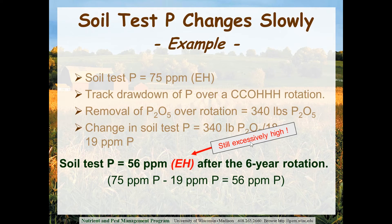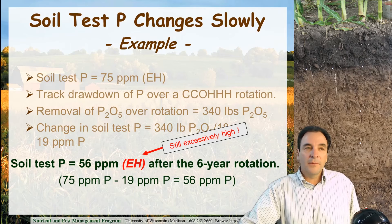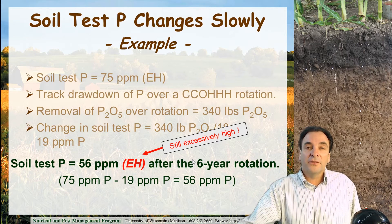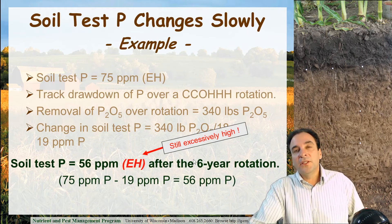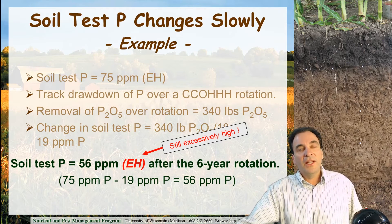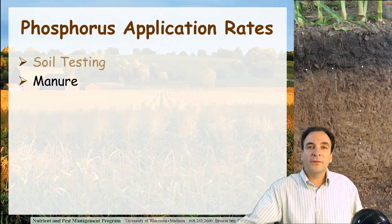So even after a six-year rotation applying no phosphorus — no commercial fertilizer, no starter, no phosphorus in the manure — we're still at excessively high levels because it takes time to draw down soil test P values. When we talk about potassium, you'll see just the opposite: soil potassium values change very rapidly. But with phosphorus, it takes time to both build up and draw down soil test phosphorus values.